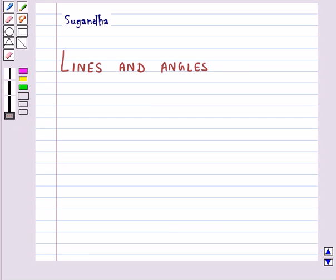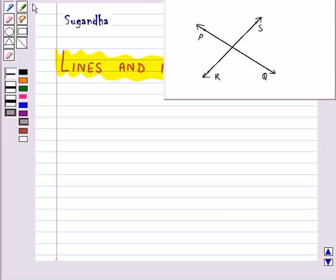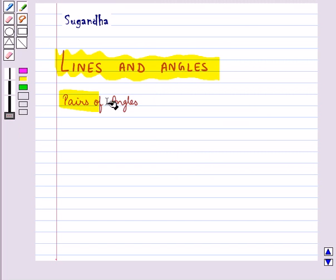Hello and welcome to this session. In this session we will discuss lines and angles. Consider two different lines PQ and RS. These can be drawn in two ways: as intersecting lines meeting at a common point O, or as parallel lines. The length of common perpendiculars at different points on parallel lines is the same, and this equal length is called the distance between two parallel lines.